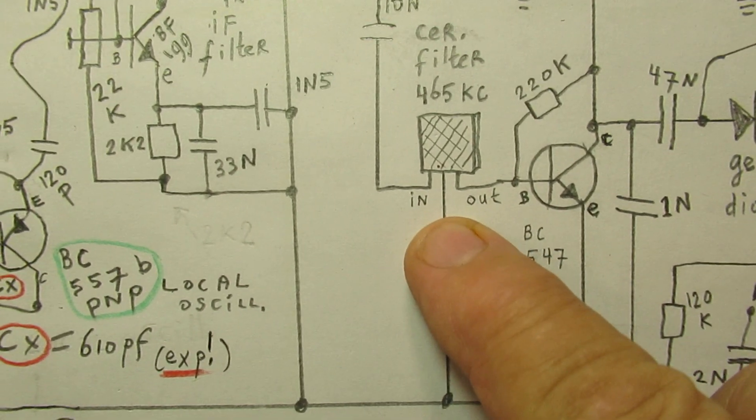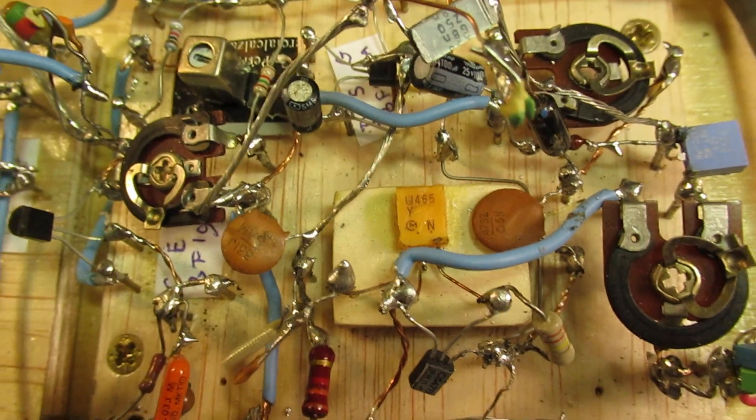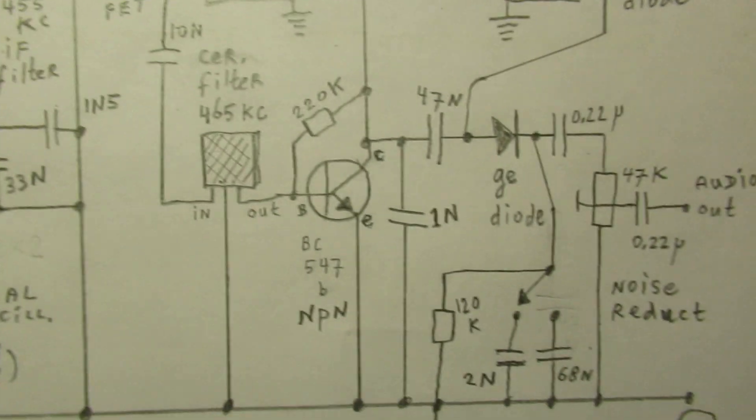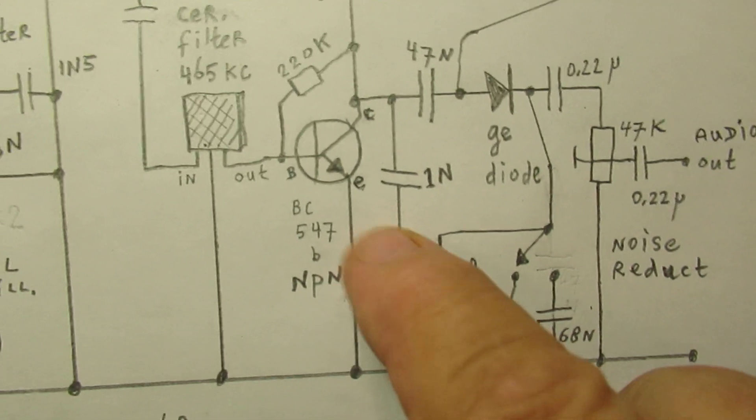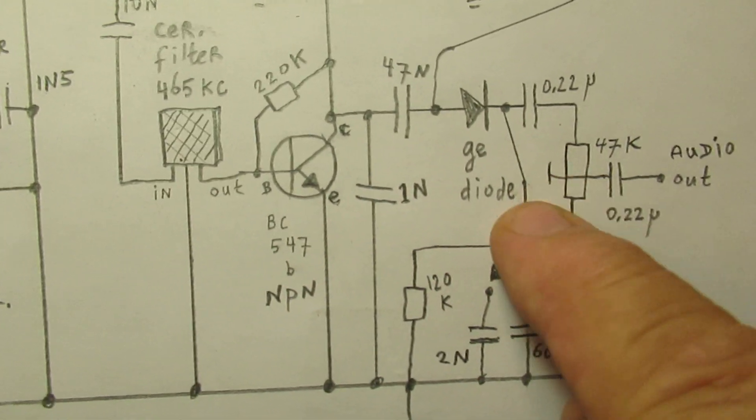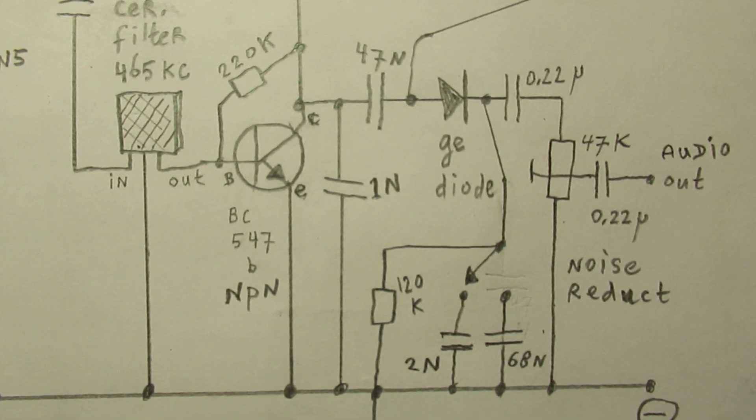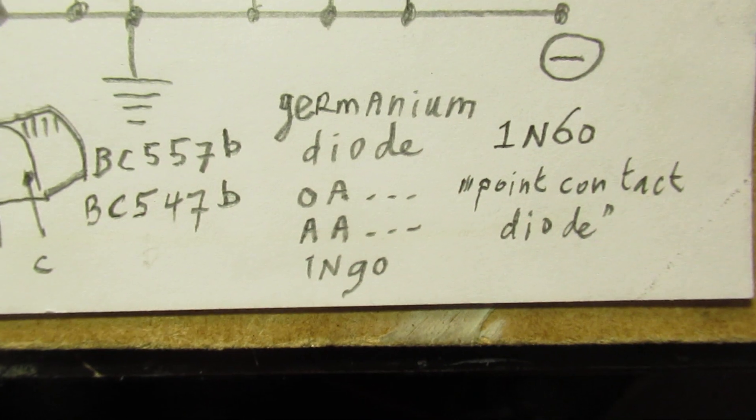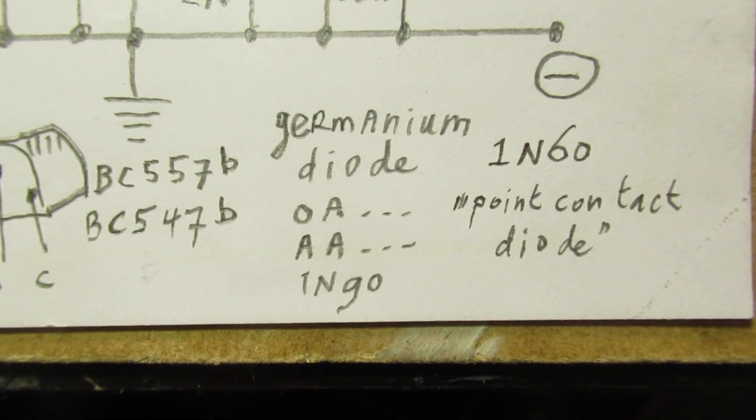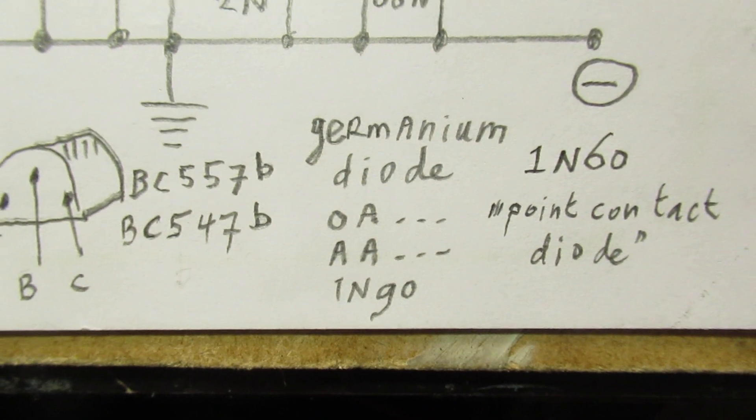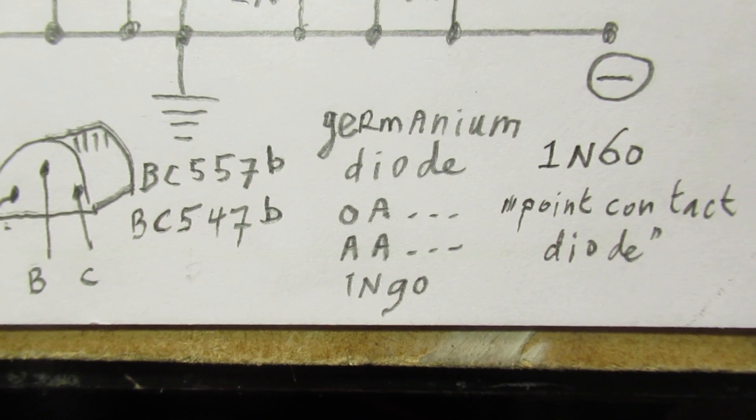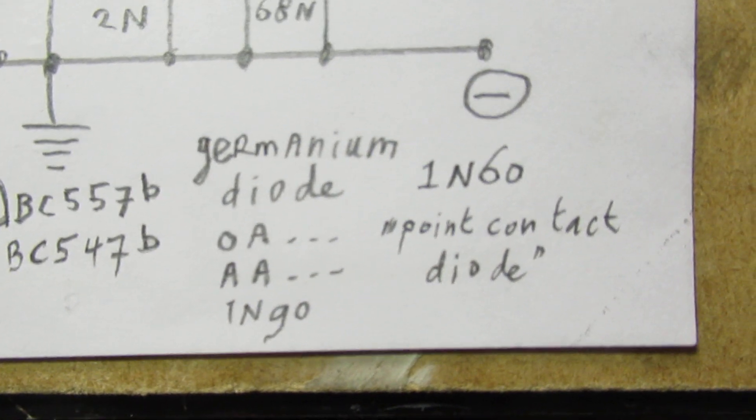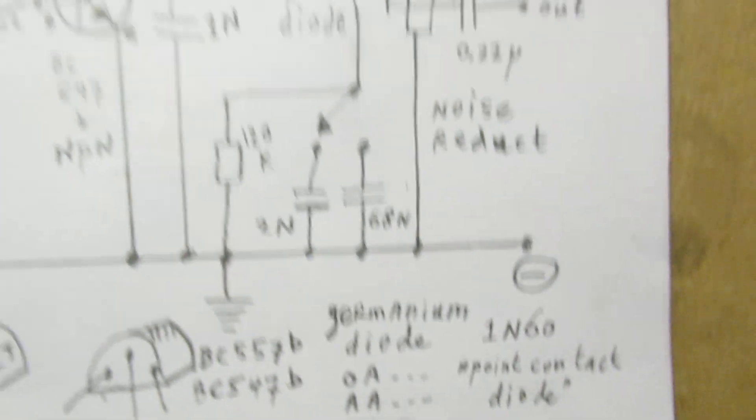Here is the ceramic filter. It's that yellow unit here. And then we have one stage of amplification. And here is the detection diode. It must be a germanium diode. And we have a few old families from Europe. The OA types or the AA types. And the 1N90 is good and the 1N60 is good.